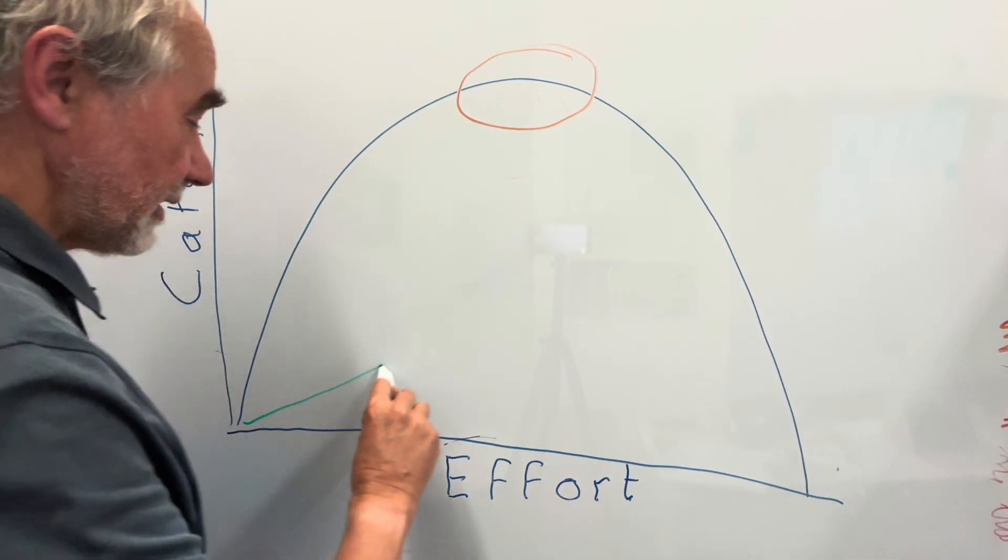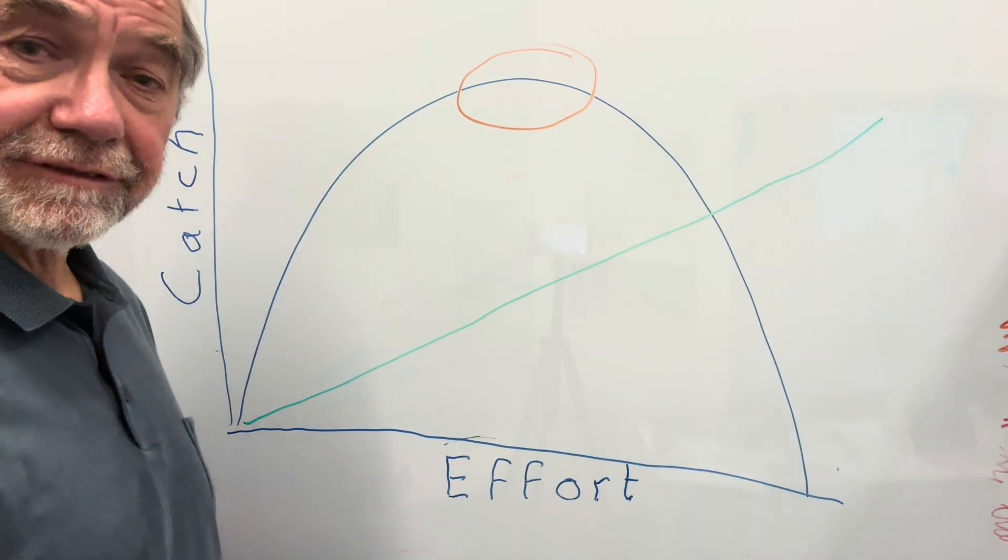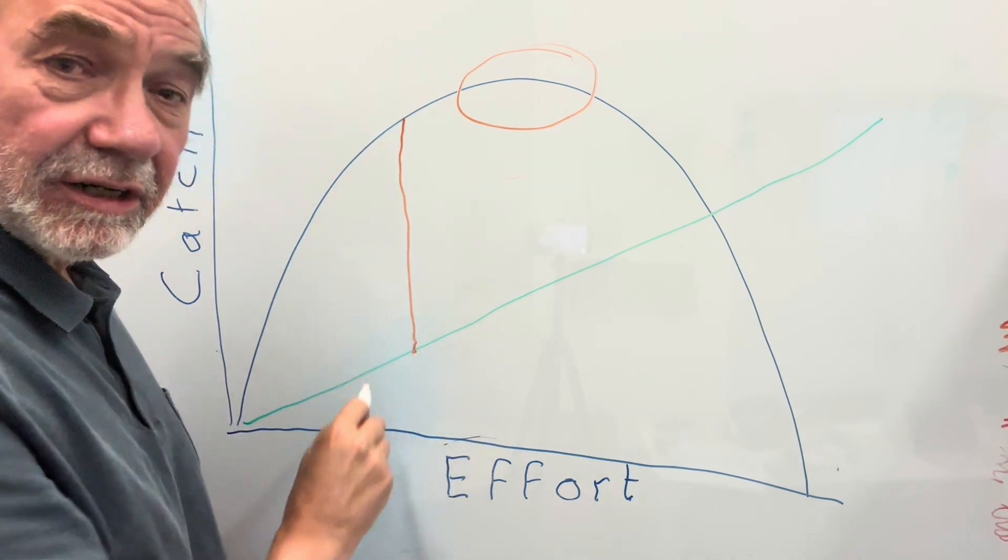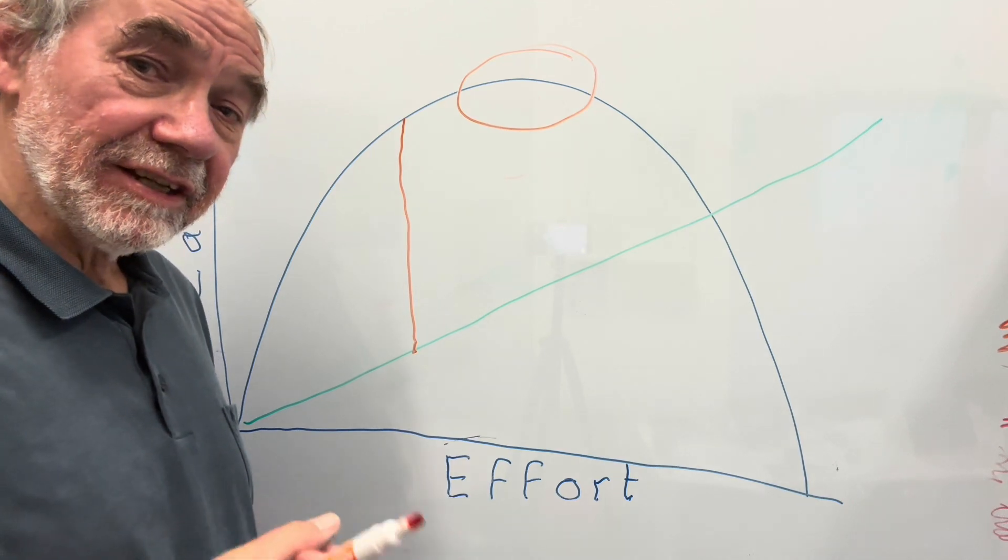Secondly, let's include costs, the cost of each fishing boat. Here the biggest profit is made where those two lines are different, the maximum economic yield.